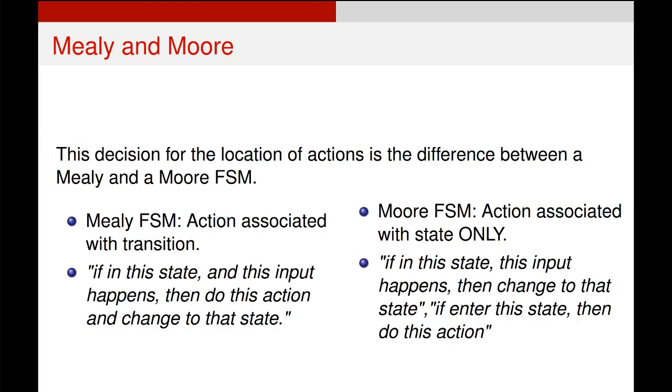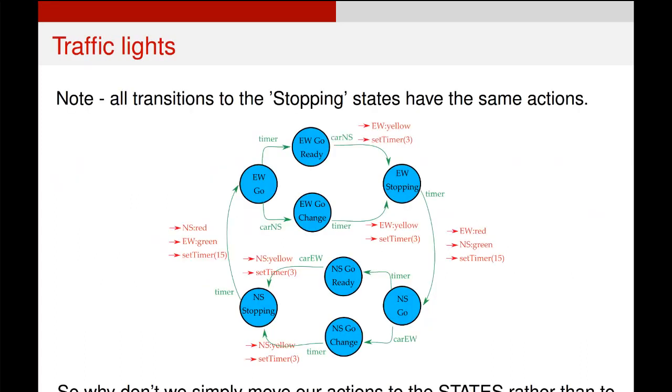The example that we have here is a Mealy finite state machine, where the actions are attached to the transitions. A Moore finite state machine has the actions attached to the states, and in some cases, Moore finite state machines are simpler.